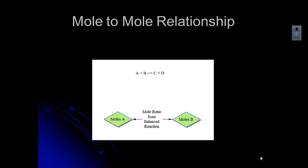This is the beginning of a flow chart. What this tells us is if we've got a reaction where A plus B gives us C plus D, and if we know how many moles of A we have started with, we know how many moles of B we need to make that reaction occur. We use that mole ratio from the balanced reaction. The coefficients in the balanced reaction give us the relationship between the number of atoms, and the number of atoms relate to moles through Avogadro's number. So that coefficient becomes the mole-to-mole ratio.